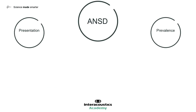ANSD occurs in one in ten children with permanent hearing loss. Many of those are diagnosed in part due to a local newborn hearing screening protocol, especially when associated with risk factors that often coincide with NICU admittance: extreme prematurity, low birth weight, ototoxic drugs, jaundice, hypoxic ischaemic encephalopathy, intraventricular haemorrhage, anoxia, respiratory distress, and ventilation. It should be noted that some of these risk factors relate to delayed maturation, and attention should be paid to the possibility of transient ANSD.